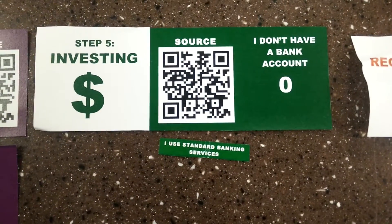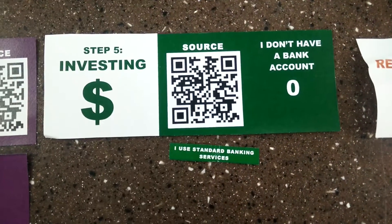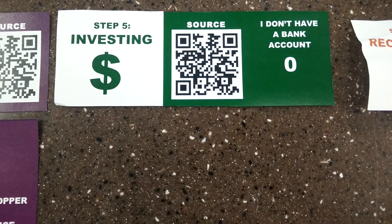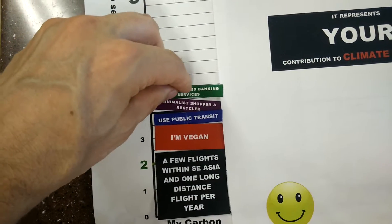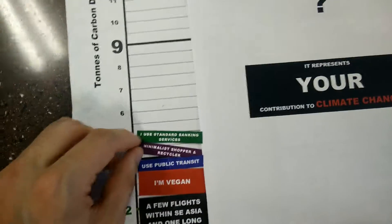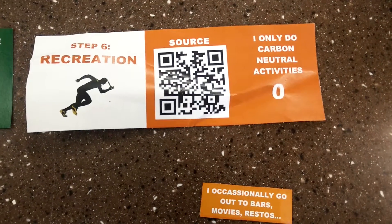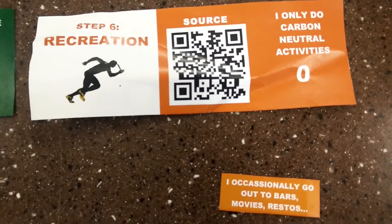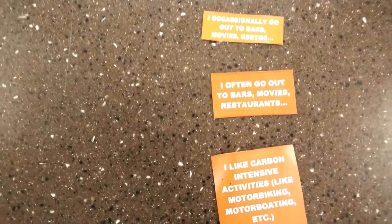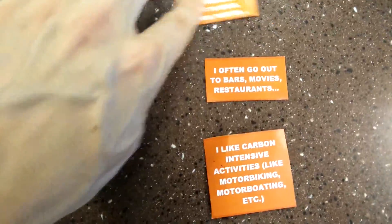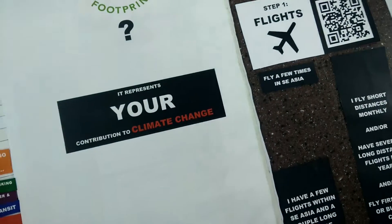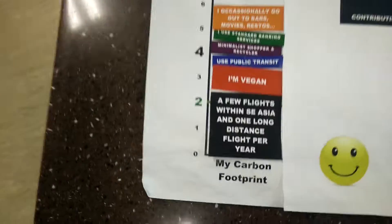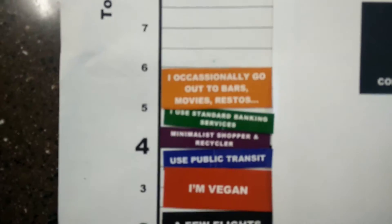This next one is something people often overlook: when you have your money in a bank, it's usually invested in very unsustainable things, unless you find a bank that doesn't. So that adds to your carbon footprint as well. Then the last one is basically your recreation. People can skip this step if they do carbon neutral activities, which are just physical activities with your body. But for a lot of us, it's occasionally going out.